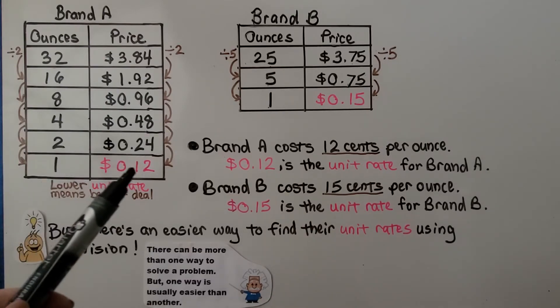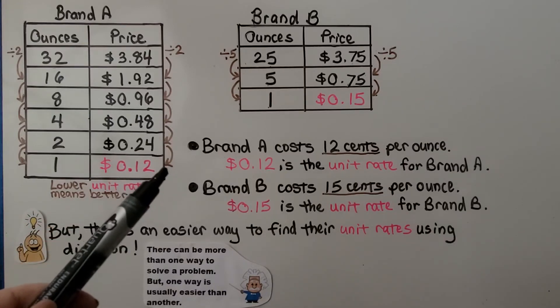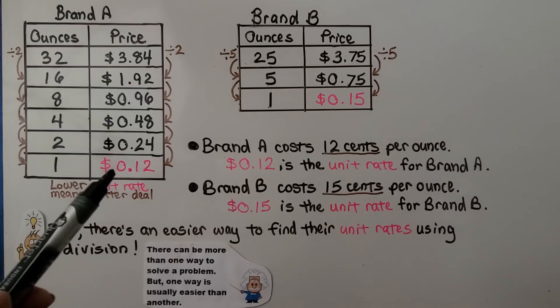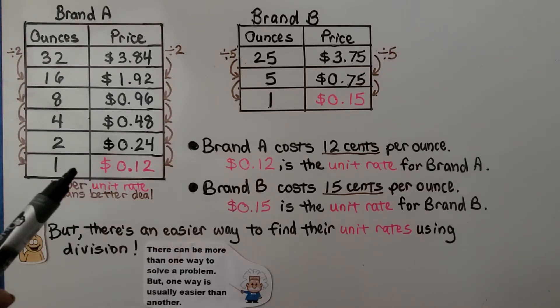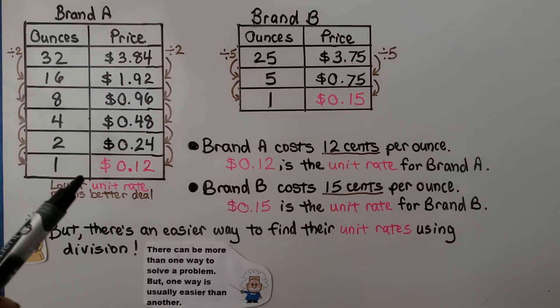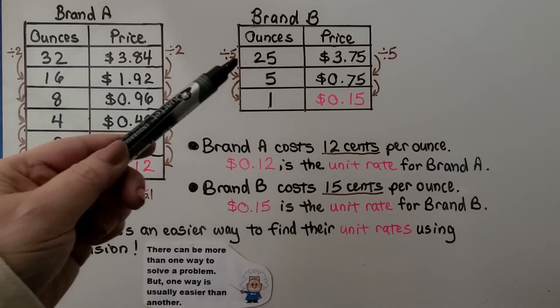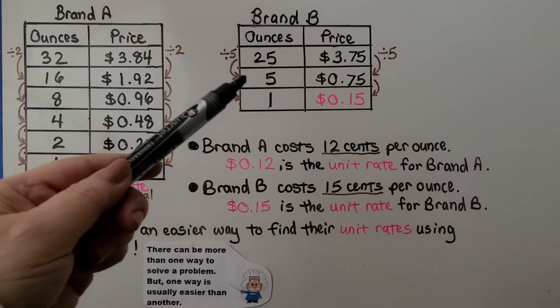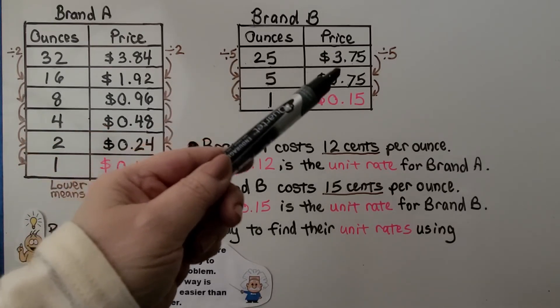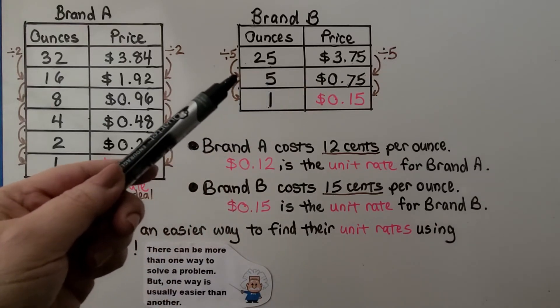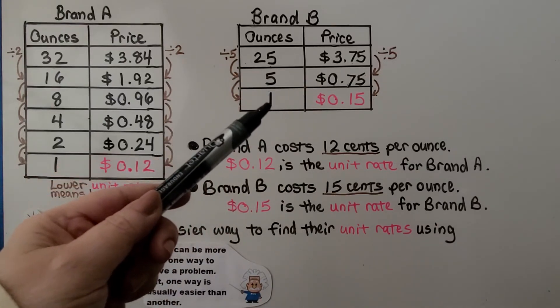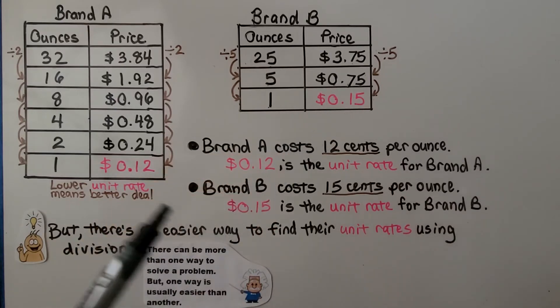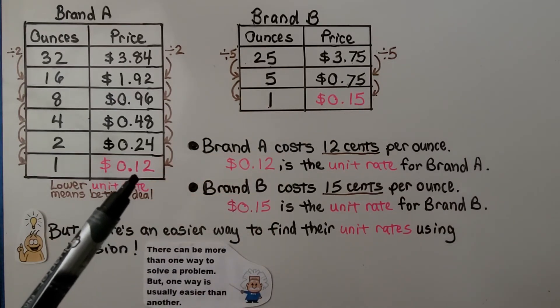We keep dividing by 2 all the way down until we get to 1. And when we get to 1, we'll see by dividing the price by 2 all the way down to this unit price that this is $0.12 per ounce. We're now at 1 ounce. We can do it for Brand B. It was 25 ounces, so we can divide it by 5. 25 divided by 5 is 5. We divide the price by 5 and get $0.75 for 5 ounces. We can divide that by 5 and get 1 ounce.